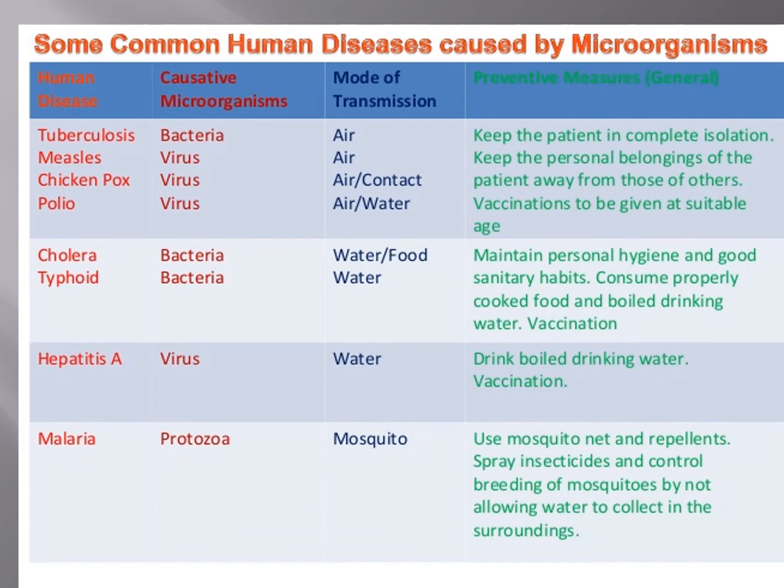Malaria: the causative agent is a protozoa, Plasmodium. Mode of transmission is through the carrier mosquito. Preventive measures include using mosquito nets and repellent, spraying insecticide, and controlling the breeding of mosquitoes by not allowing water to collect in the surroundings.